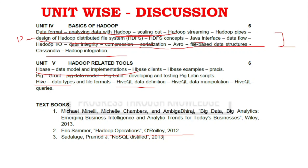For Unit 5 Part A, PIG and PIG data model are key areas, giving approximately 2 questions. Looking at this subject overall, Part A is a little challenging because the areas are vast, particularly in Units 4, 3, and 2.